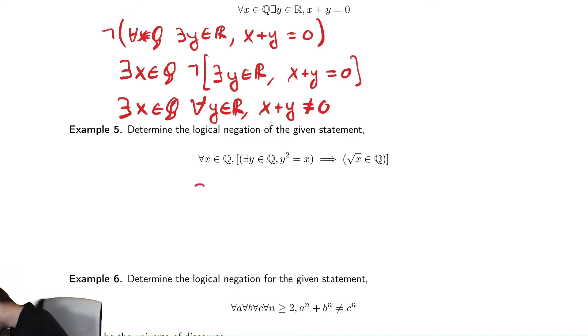So the for all changes to there exists an x in the rational numbers. This statement looks like p, which I'm highlighting in green, implies q, which I'm highlighting in that orange. So the negation of p implies q is p and not q. So this is there exists an x such that we'll keep the same brackets. p, which is this there exists a y in the rational numbers such that y squared equals x and not the second statement. So radical x is not in the rational numbers.